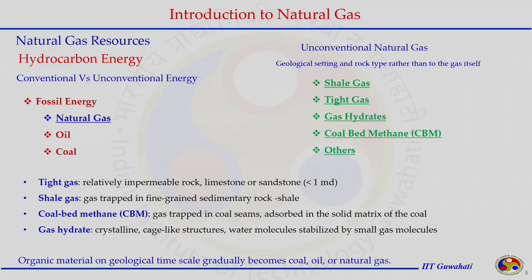We will discuss unconventional energy resources in detail near the end of this course. Coal bed methane is an unconventional resource where gas is trapped in coal seams — it is adsorbed in the solid matrix of the coal.